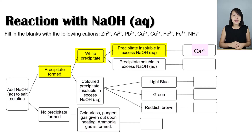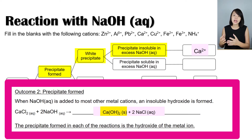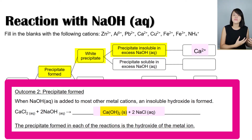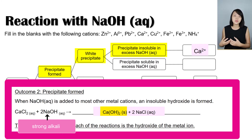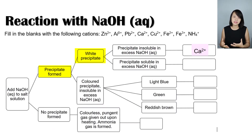For example, calcium chloride reacts with sodium hydroxide to form calcium hydroxide and a soluble salt. The white precipitate we observe is calcium hydroxide. Calcium hydroxide is sparingly soluble, meaning at low concentrations of hydroxide ions it remains soluble. However, sodium hydroxide being a strong alkali fully ionizes, producing a high concentration of hydroxide ions. This high concentration causes calcium hydroxide to precipitate out as a white solid.